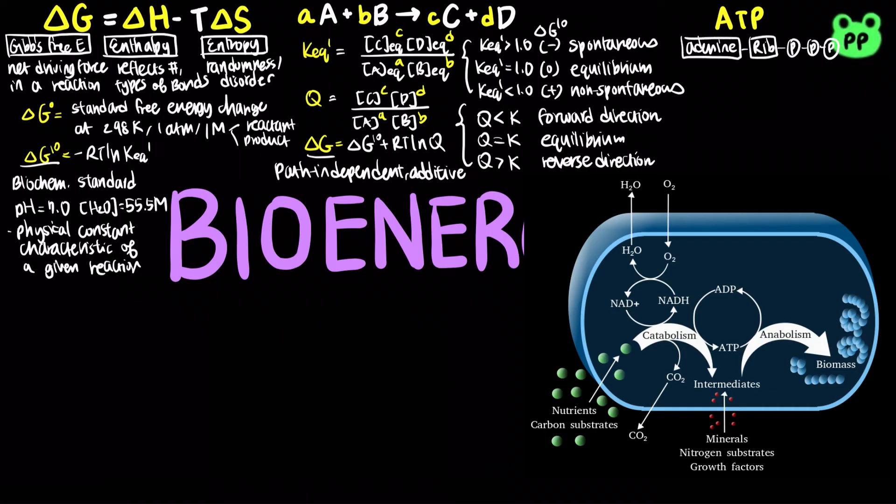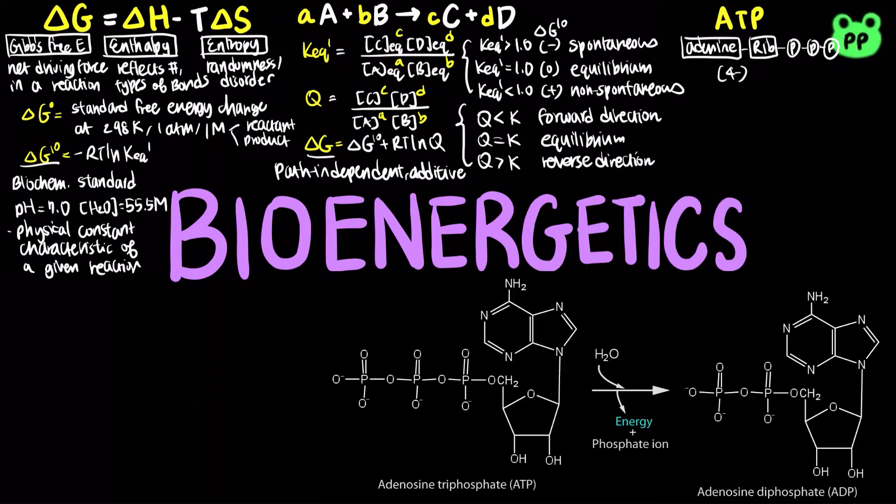ATP stores high potential energy, which means that the hydrolysis of ATP into ADP and phosphate releases a huge amount of free energy. ATP is a very high energy compound for three reasons.